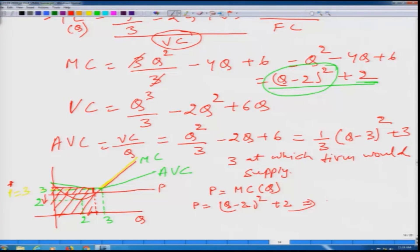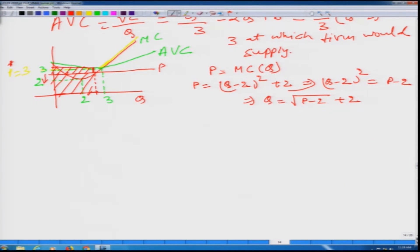From here if we solve it, what do we get? Q minus 2 square is equal to p minus 2. And this can be rewritten as root under p minus 2 plus 2. And this is the supply function. Of course we have to add that p has to be greater than or equal to 3. Then only according to this function firm would supply in the market. If p happens to be less than 3, then this firm would not supply anything in the market. So we can say the supply function is equal to root p minus 2 plus 2 if p is greater than or equal to 3, and 0 if p is less than 3.